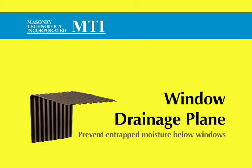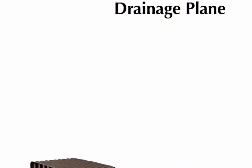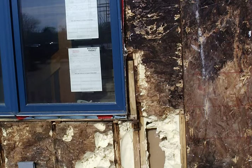The Window Drainage Plane from MTI — prevent entrapped moisture below windows. The sub-sill region of a window is a common problem area for entrapped moisture, and window installations take extra measures to prevent moisture from getting in here.